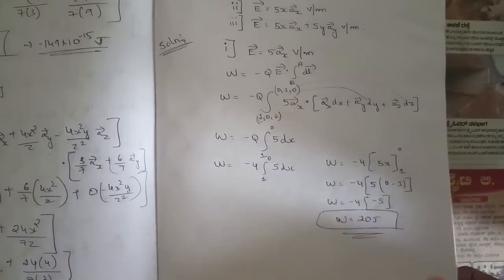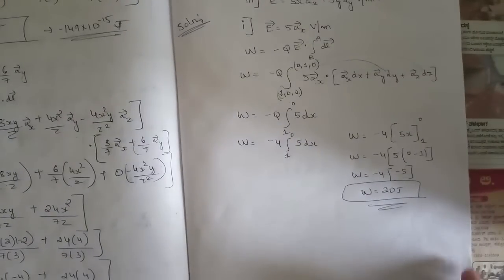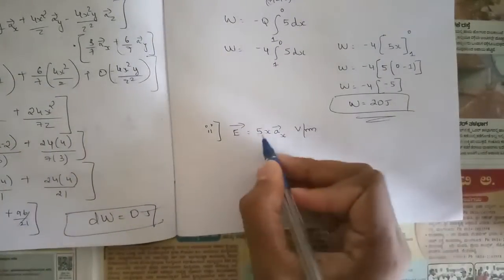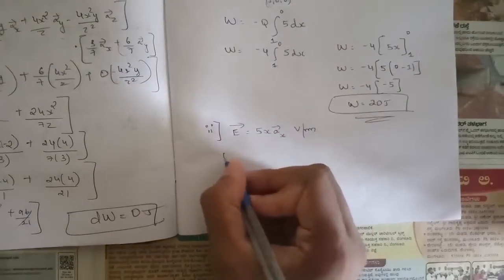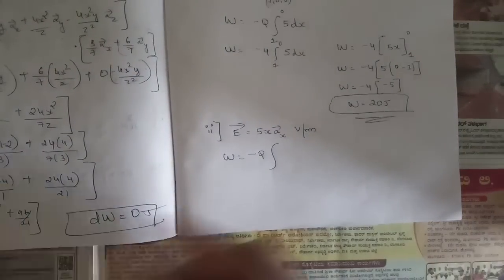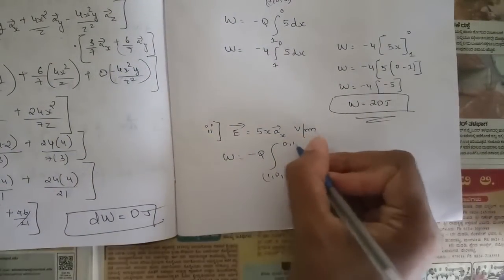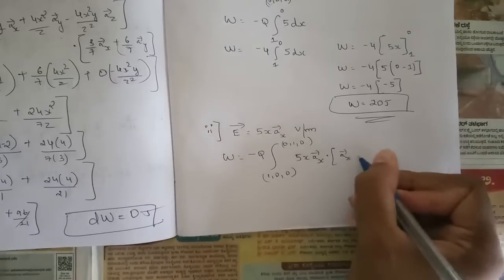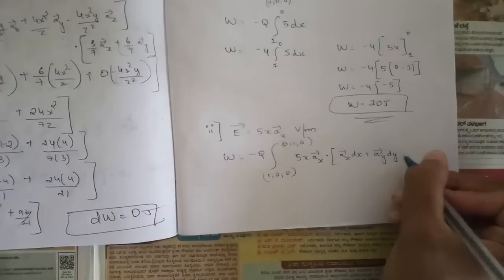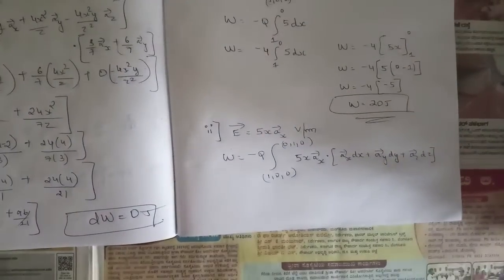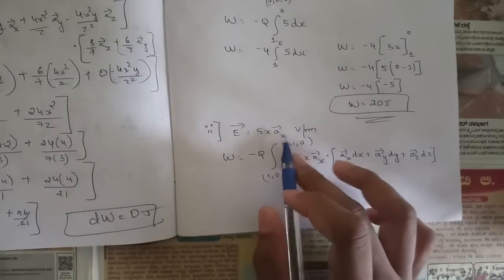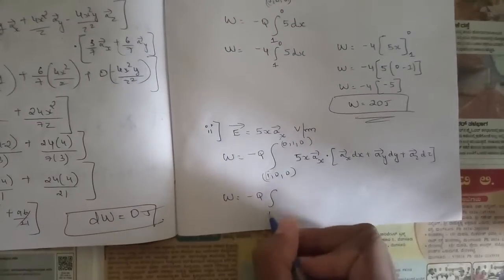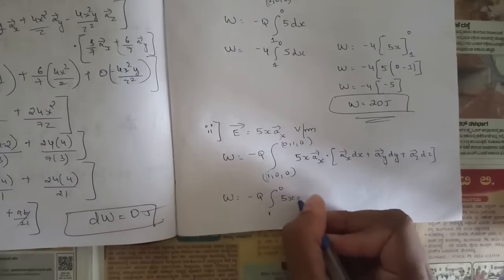The answer to sub-question 1 is 20 joules. Now for sub-question 2, E = 5x â_x volts per meter. The formula remains the same: W = -Q ∫(B to A) E⃗·dl⃗. Since E is still in the â_x direction only, we consider only x coordinates, so W = -Q ∫(1 to 0) 5x dx.